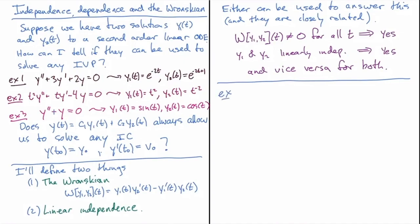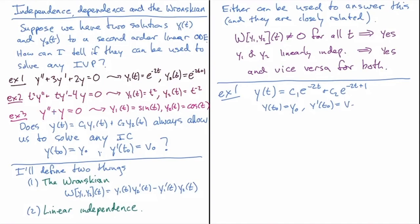Let's look at example one. We have the equation and two solutions I've found, and I want to know if y(t) = c1·e^(−2t) + c2·e^(−2t+1) can solve any initial condition of the form y(t₀) = y₀ and y'(t₀) = v₀.